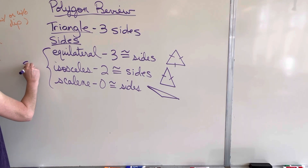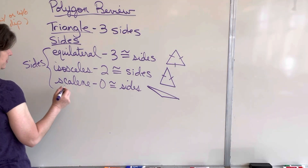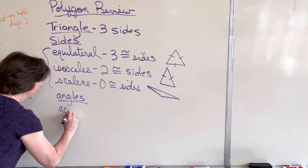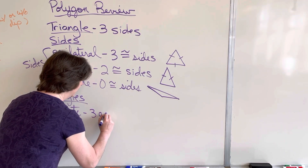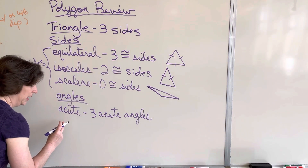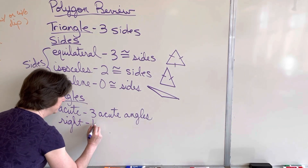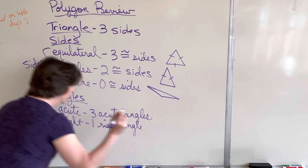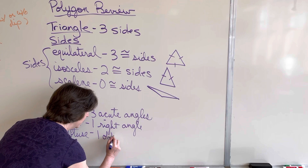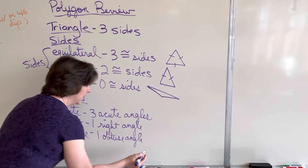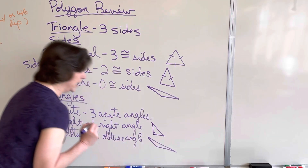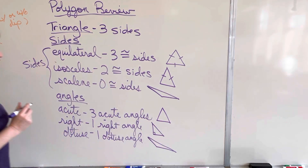These three are your choices when talking about a triangle's sides. We can also talk about a triangle in terms of its angles. Starting with acute — an acute triangle has three acute angles; all the angles are going to be acute. The next one is a right triangle, which has one right angle, or a 90-degree angle. And the last one is an obtuse triangle, which has one obtuse angle, bigger than 90 degrees.